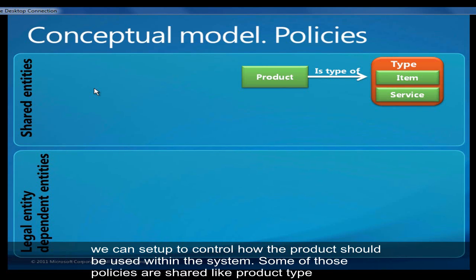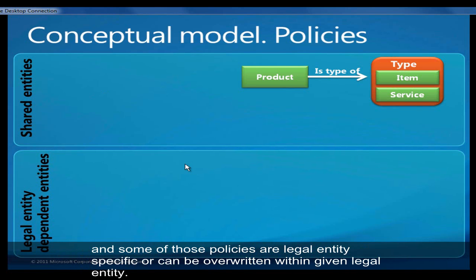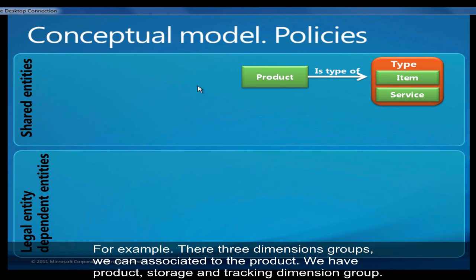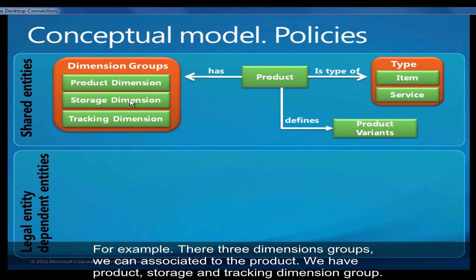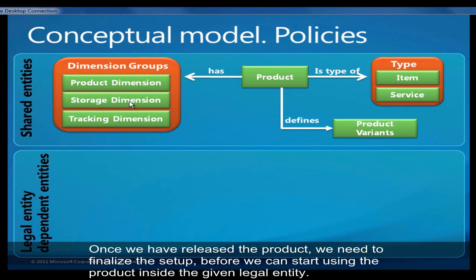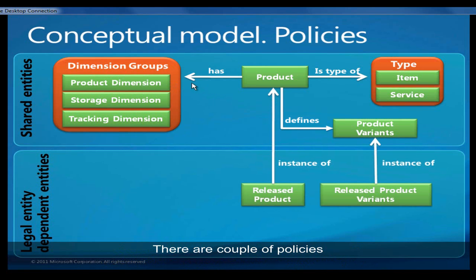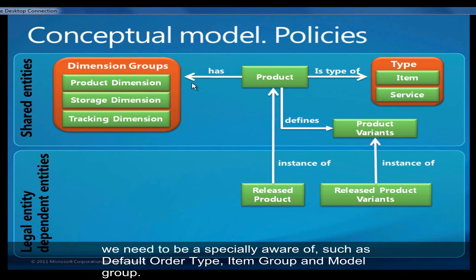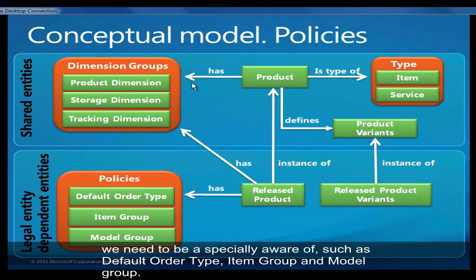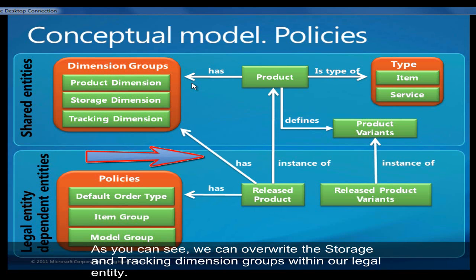There are different policies we can set up to control how the product should be used within the system. Some of those policies are shared, like product type, and some of those policies can be legal entity specific or can be overwritten within a given legal entity. For example, we have three dimension groups which can be associated with the product: product, storage, and tracking dimension groups. Once we release a product to the given legal entity, we need to finalize the product setup before we can start using this product for any operation within that company. Important policies to be especially aware of include default order type, item group, and model group. You also have the opportunity to override the storage and tracking dimension group within your legal entity.